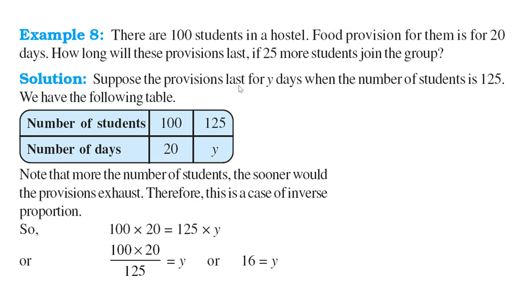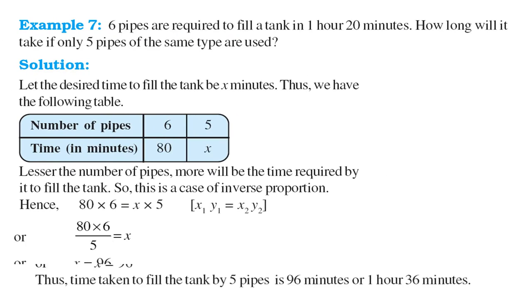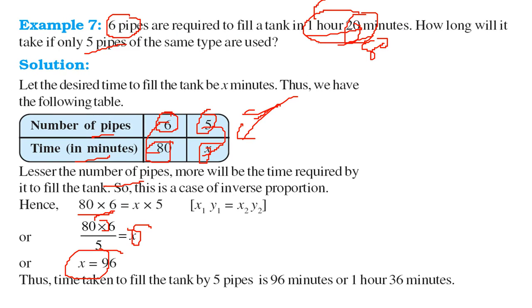And 96 is of course, because this question is asked in terms of 1 hour 20 minutes. So you can just convert it. 60 plus 36, that is 1 hour 36 minutes.